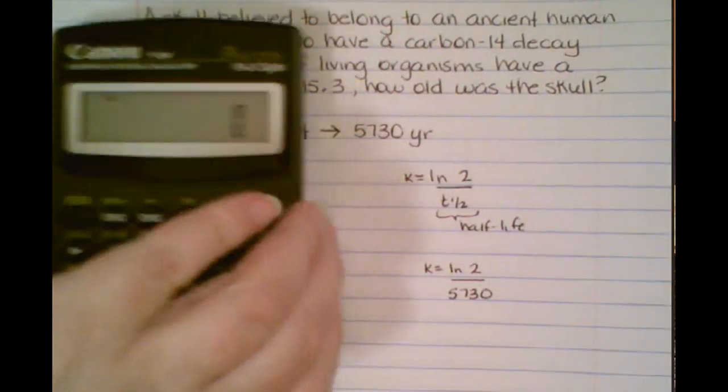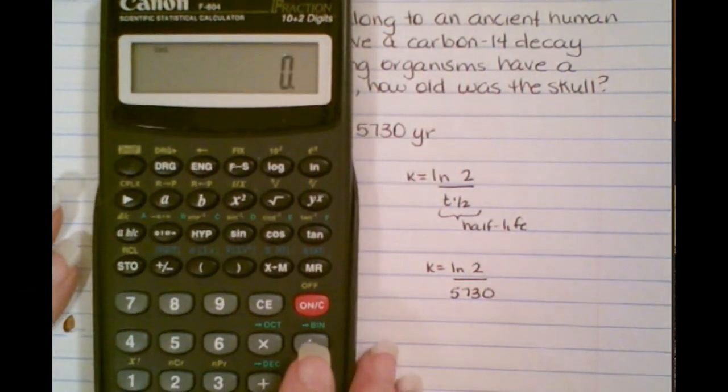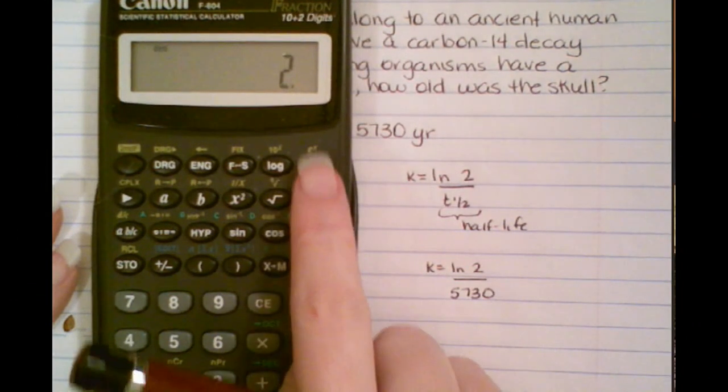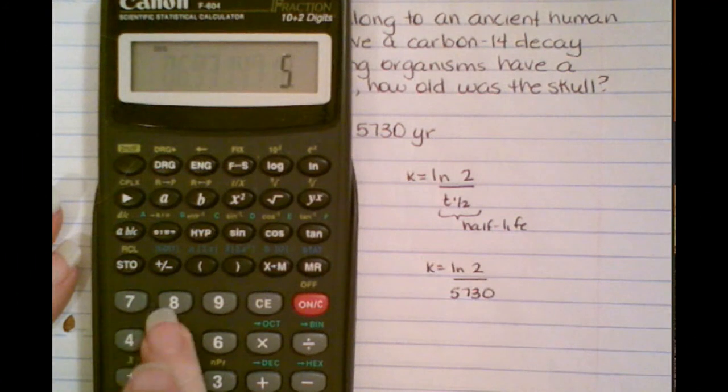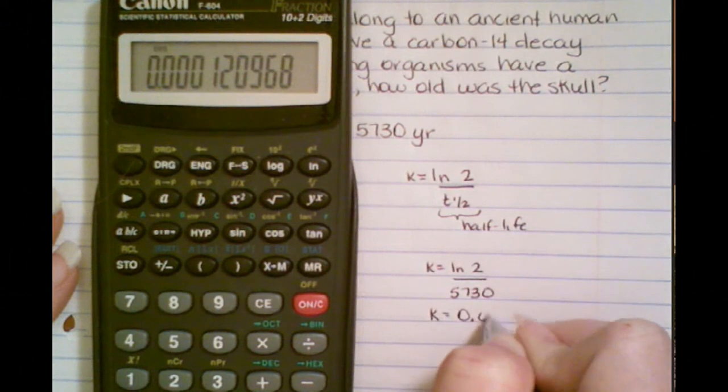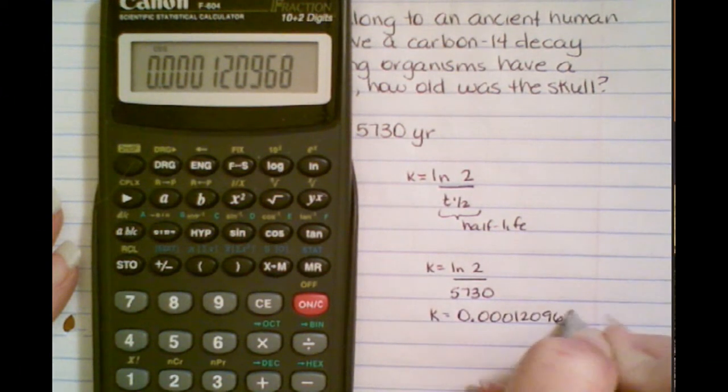So how do you do that on the calculator? I take my calculator. I'm going to first press 2, and then I'm going to hit the natural log, which is ln, and then I'm going to divide that by 5730. So that's what k is right there. k equals 0.000120968.